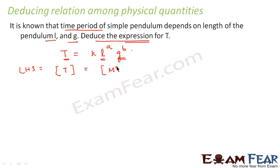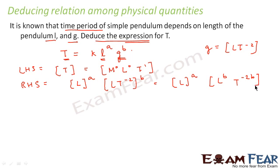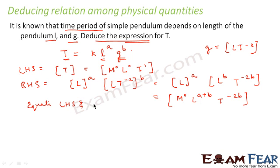The LHS dimensional formula for T is M⁰·L⁰·T¹. On the RHS, L to the power a, and g (acceleration due to gravity) has the same dimensional formula as acceleration: L·T⁻², raised to the power b. Expanding, this gives L^(a+b)·T^(−2b), or M⁰·L^(a+b)·T^(−2b).